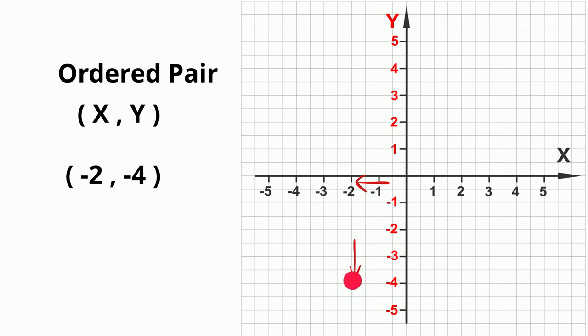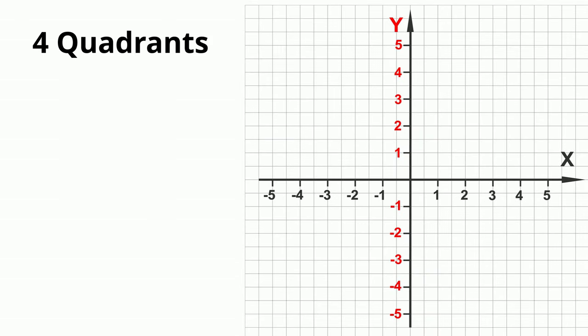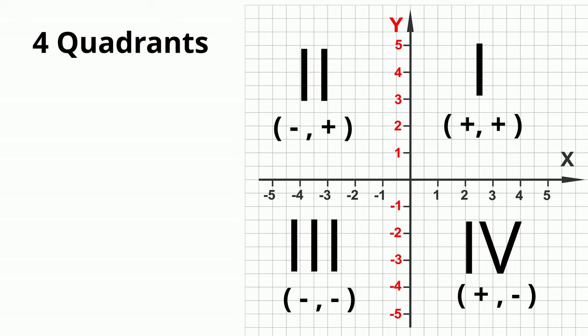The coordinate plane is also divided into 4 quadrants and I will label them here. In quadrant 1, you always have a positive x and a positive y. Next in quadrant 2, you have a negative x and a positive y. Quadrant 3 is negative negative and quadrant 4 is a positive and a negative, and they use Roman numerals.